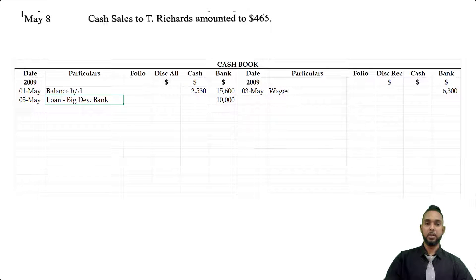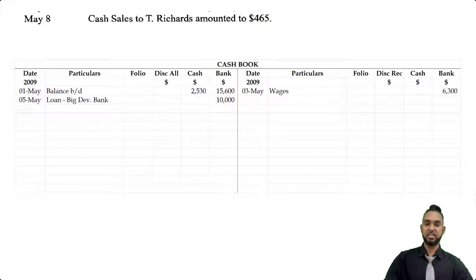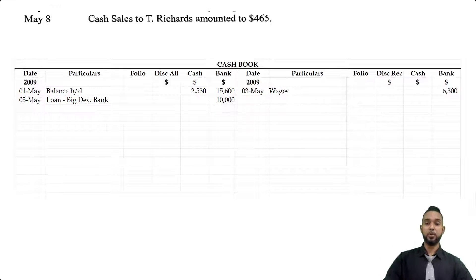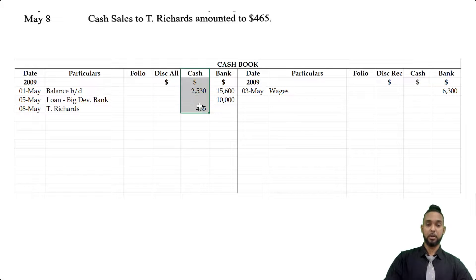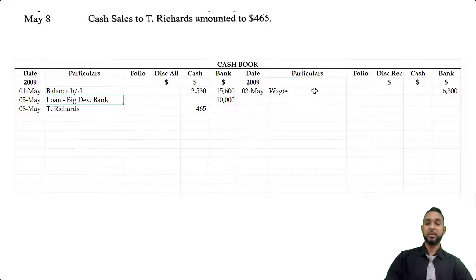Moving on, we now have cash sales. T. Richards amounted to $465. If you make cash sales, you are earning money, and if it's cash sales, you're actually collecting cash, which means your cash is going up. Since cash is an asset and we have to record an increase in an asset, you have to debit the asset account. So you're going to see on the debit side of the cash book, under the cash column, $465, coming from T. Richards. The particulars column on the debit side tells us where the money is coming from; on the credit side, that tells us where the money is going.